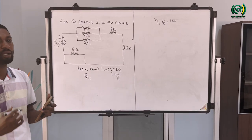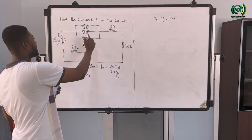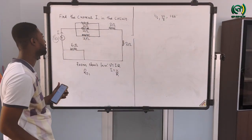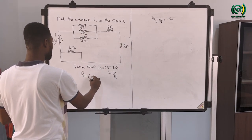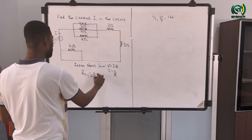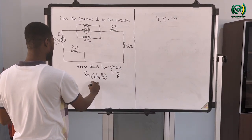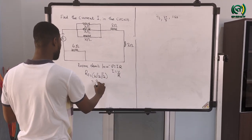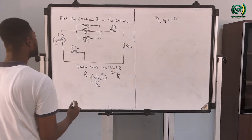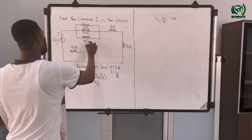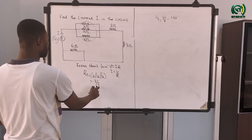From this circuit we can identify that these three resistors — one, two, three — are connected in parallel. So simplifying them we have 2Ω in parallel with 2Ω and also in parallel with 2Ω. Simplifying this, we are going to have 2/3. So this whole parallel circuit has been reduced to a single resistor of 2/3 ohm.